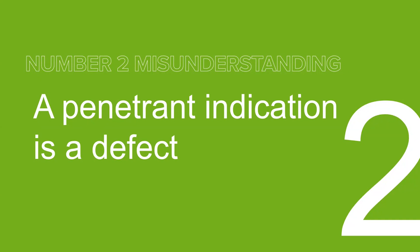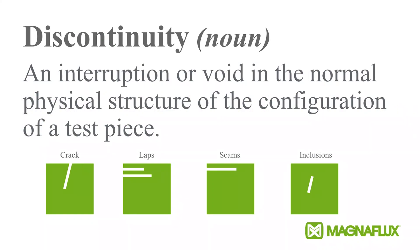Our next misunderstanding: a penetrant indication is a defect. This is a completely wrong understanding. A lot of people — especially trainees and level one types — will think that everything that shows up is a defect. A discontinuity is an interruption or void in the normal physical structure of the test piece. The penetrant seeps into cracks, laps, and seams — those are indications, not defects.